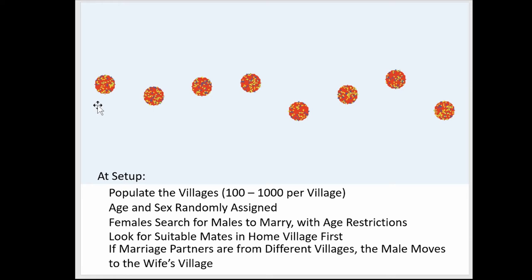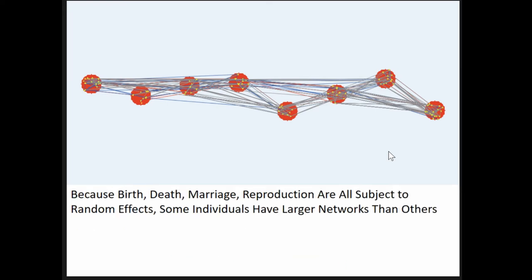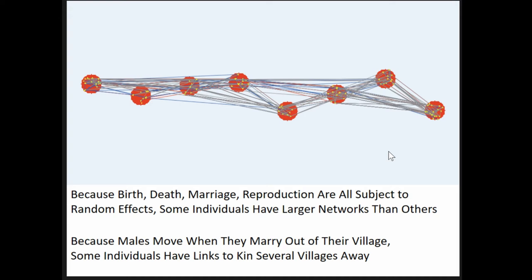Agent sexes are randomly assigned. Females look for males to marry. When they find suitable mates in their home village, they marry them. If they don't, they marry somebody in a different village. The system in the model is matrilocal, so the male moves to the female's village. They run for a while to get multiple generations to build up these networks. Parents are linked to children, siblings get linked, spouses get linked. Because males move and marry out of the village — though not all of them — some marry in their home village, some marry several villages away, and people wind up with links to all kinds of different places.